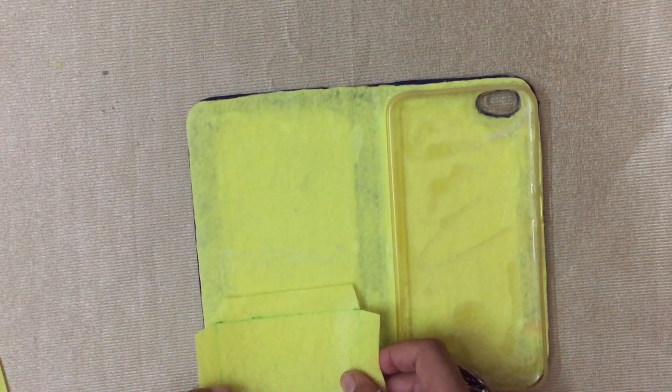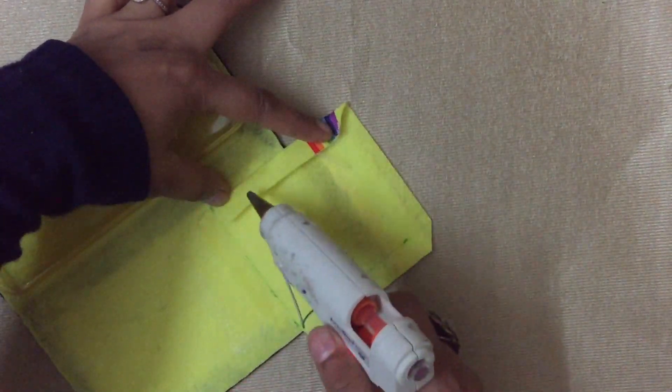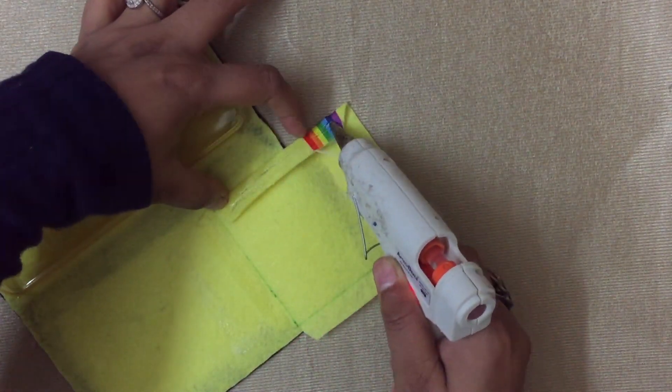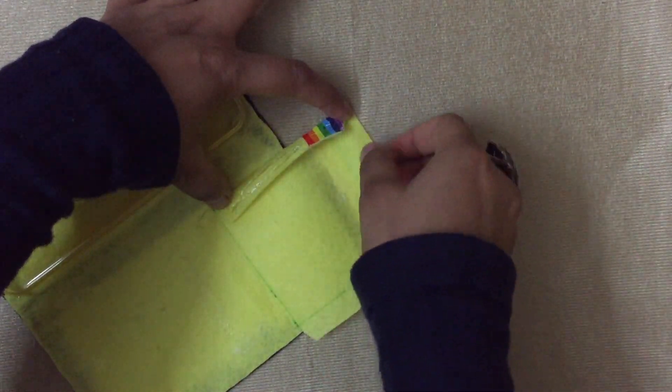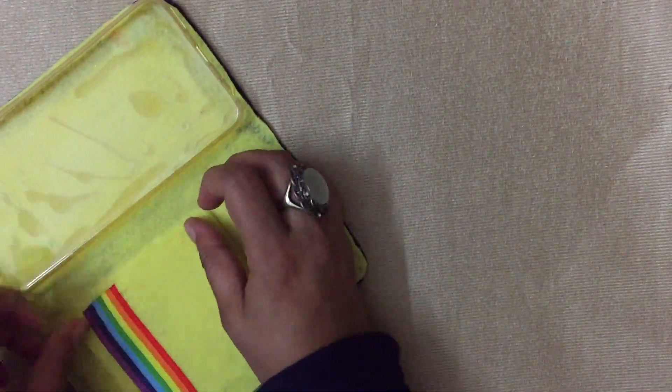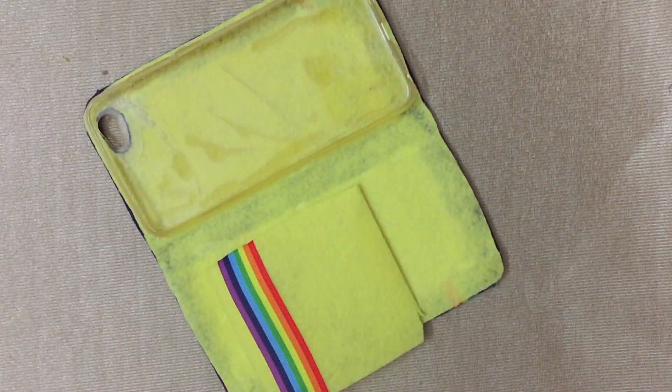Now glue the first pocket to the cover as shown. Ensure that your pockets do not overlap that one centimeter gap between the front piece and the back piece, or your cover will not close properly.